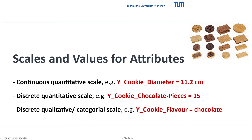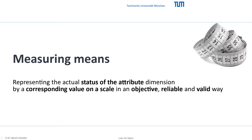The type of attribute determines the scale with its related values. Continuous quantitative, for example y-cookie-diameter equals 11.2 cm. Discrete quantitative, for example y-cookie-chocolate-pieces equals 15. And discrete qualitative, for example y-cookie-flavor equals chocolate. Measuring means representing the actual status of the attribute dimension by a corresponding value on a scale, in an objective, valid, and reliable way. Even assigning the flavor of cookies as chocolate versus vanilla is a measurement.